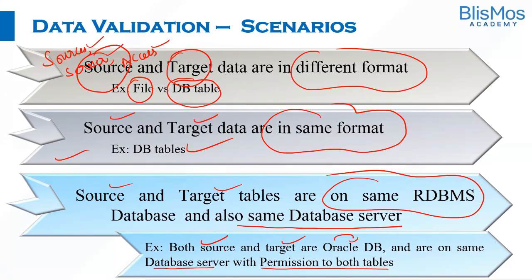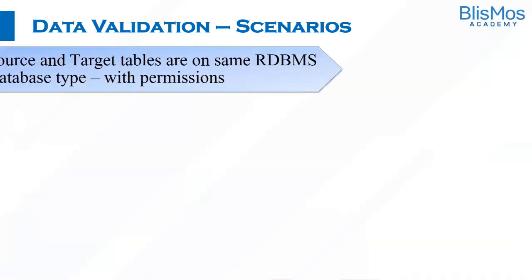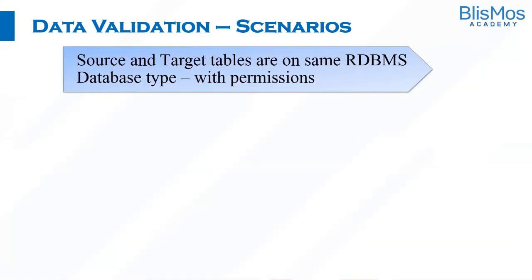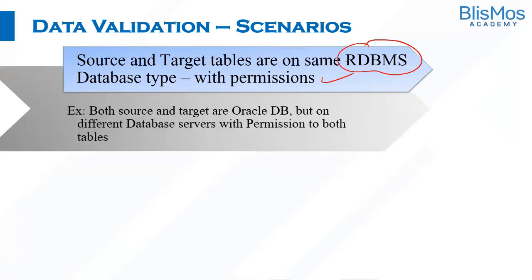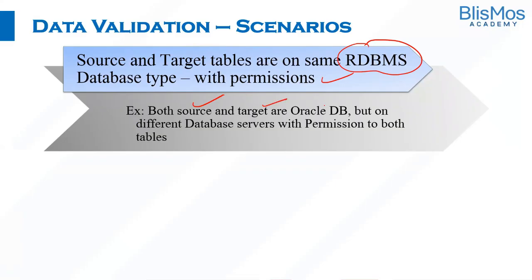In this scenario, source and target are on the same Oracle DB and on the same database server, and the testing team has access to both. The next scenario is where source and target tables are on the same RDBMS but on different database servers, with the testing team having permissions to both. For example, source and target are both on Oracle but on different database servers.